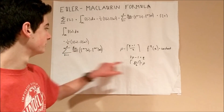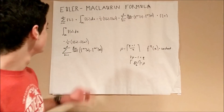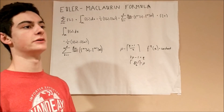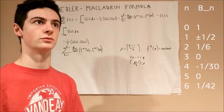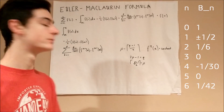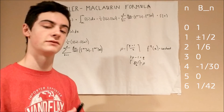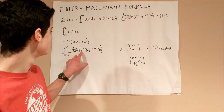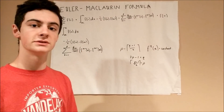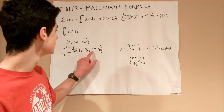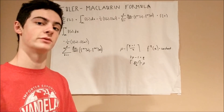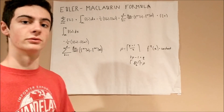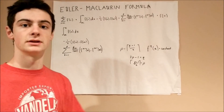k runs from 1 to p. You take the Bernoulli number B(2k) — so for k equals 1, that would be the second Bernoulli number, which is 1/6. Divide that by (2k) factorial, then multiply by the function differentiated (2k minus 1) times with n plugged in, minus the function differentiated (2k minus 1) times with m plugged in. That is how you get the third component.